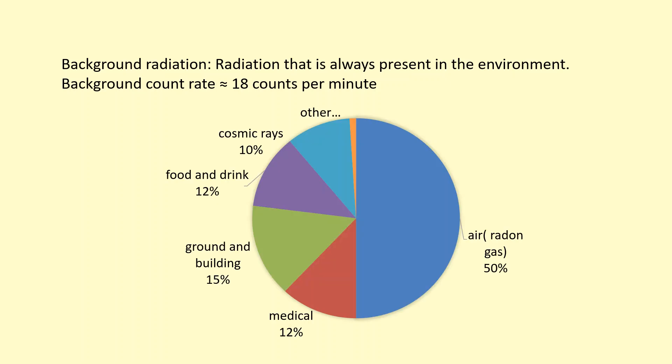The things that cause background radiation include, for example, the air around us has radon in it which is radioactive so that emits some radiation, medical uses such as x-rays, the ground and buildings around us, food which has radioactive isotopes, cosmic rays, and so on.